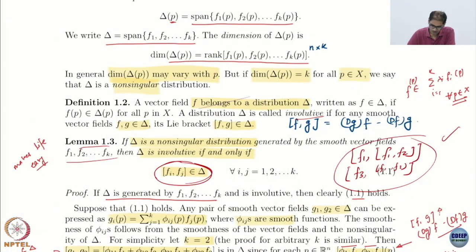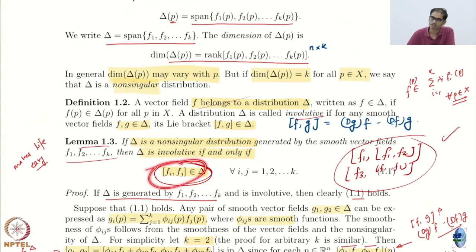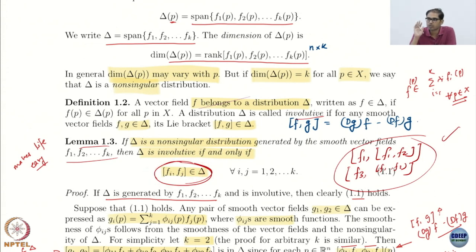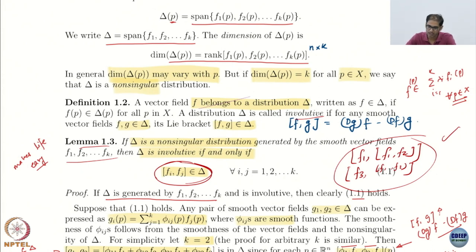This result is very powerful because it really gives an easy check. If I have k vector fields in the distribution, I just have to check their combinations — kC2 — and you are done. I check that their combinations belong to the distribution and you are good to go.